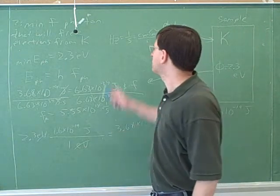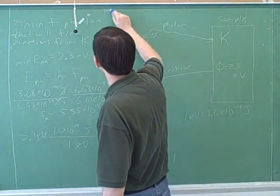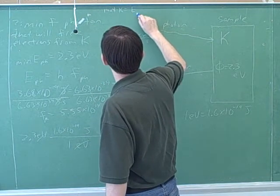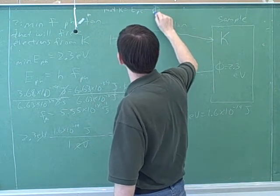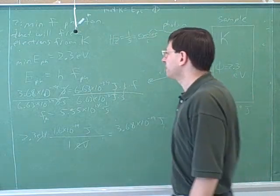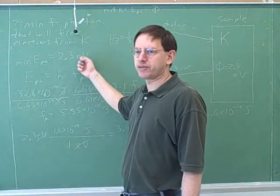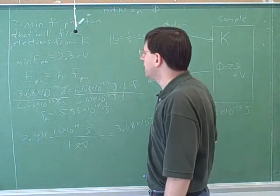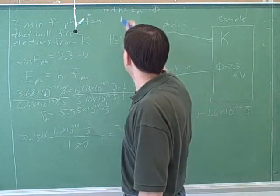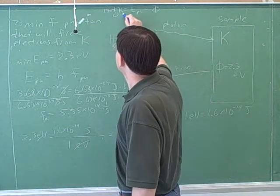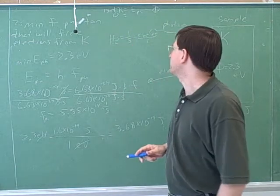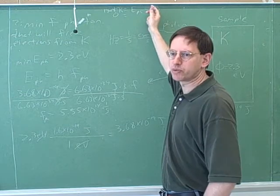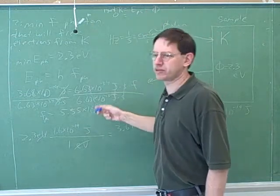Now notice how your first instinct was to try to use the formula: maximum kinetic energy equals the energy of the photon minus the work function. You could use that, but I think it's really better to just think through the logic. If you were going to use that formula and want the minimum energy, you'd want a case where the electron comes out with zero kinetic energy — so you set the energy of the photon equal to the work function. I think it's really easier to work through the logic.